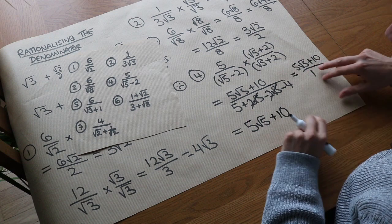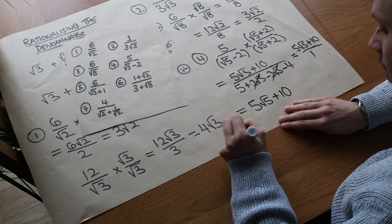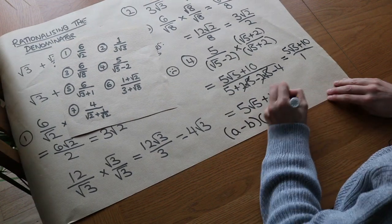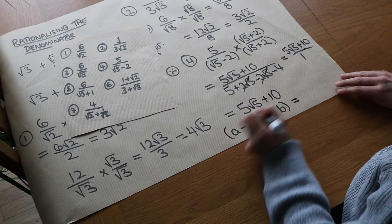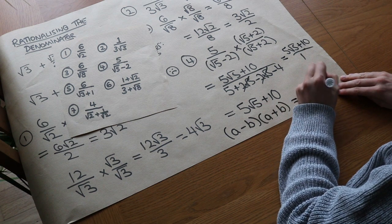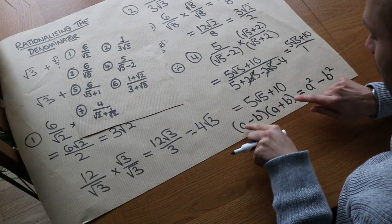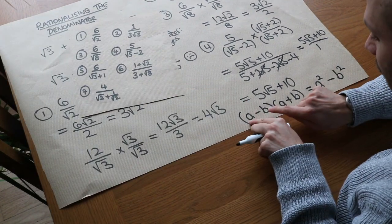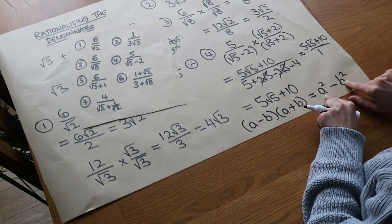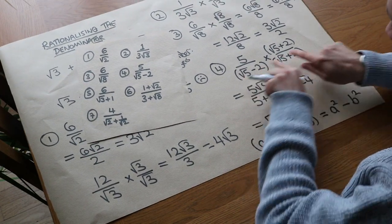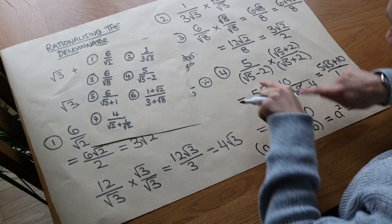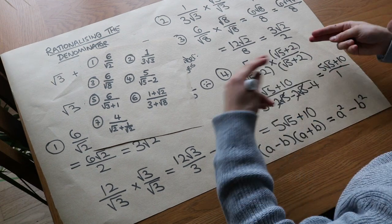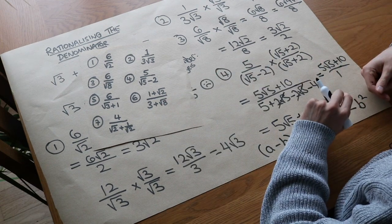Why does this trick work? If you expand (a minus b)(a plus b), it simplifies to a squared minus b squared, because the ab and minus ab terms cancel. So when you multiply (root 5 minus 2)(root 5 plus 2), both root 5 and 2 get squared. When root 5 is squared it becomes 5 — it's no longer a surd. That's why it works.